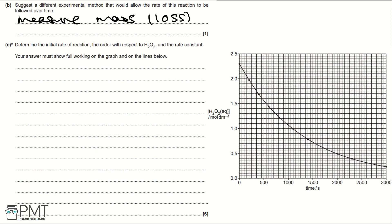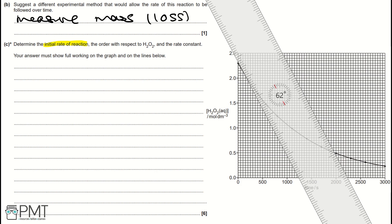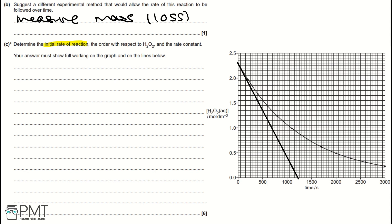Part C: determine the initial rate of reaction, the order with respect to H2O2, and the rate constant. Your answer must show full working on the graph and on the lines below. To find the initial rate, we draw a tangent at T = 0 — lining up a ruler at T = 0, crossing one point and drawing the tangent to the graph as shown.